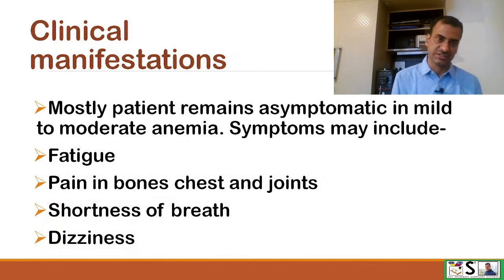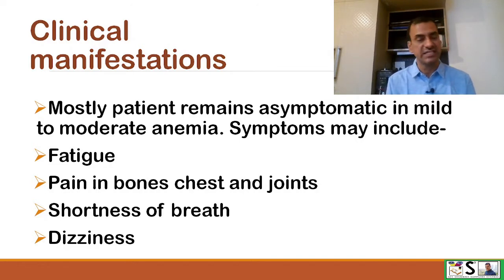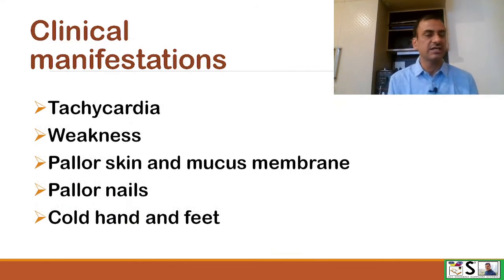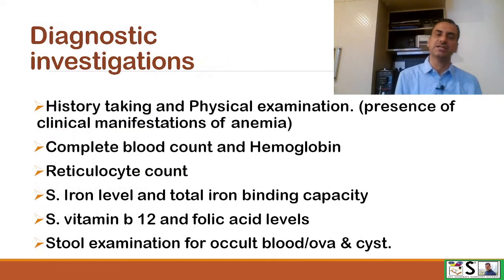Clinical manifestations. Mostly patients remain asymptomatic in mild to moderate anemia. Symptoms may appear as fatigue, pain in the bones, chest and joints, shortness of breath, dizziness, tachycardia, general weakness, pallor of skin and mucous membrane, pallor of nails, and cold hands and feet. These are the basic clinical manifestations.